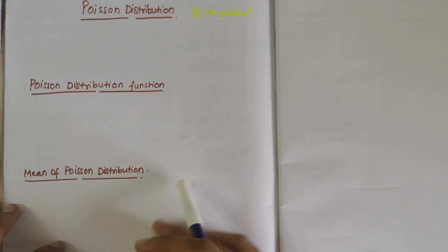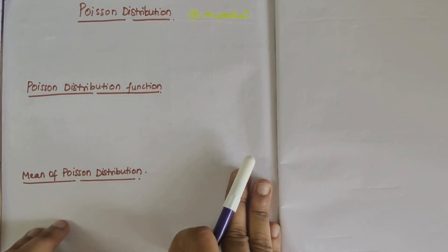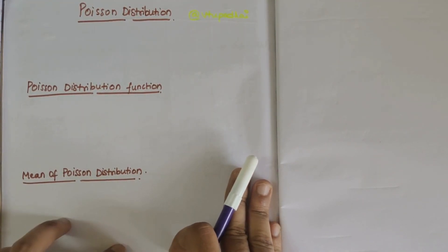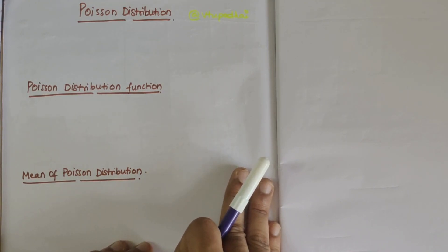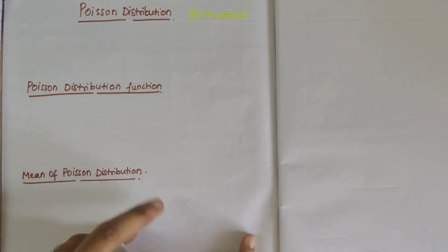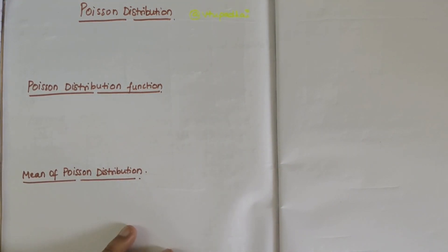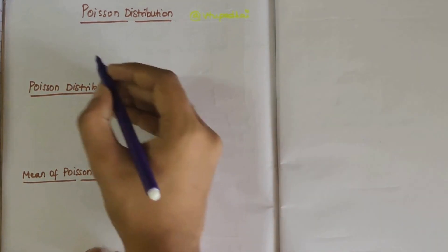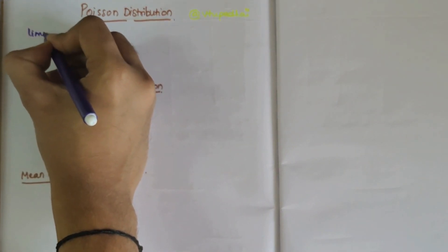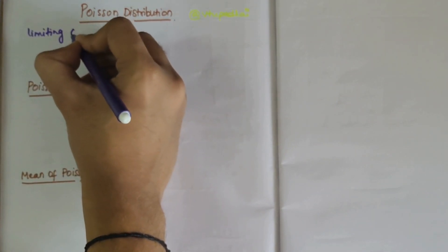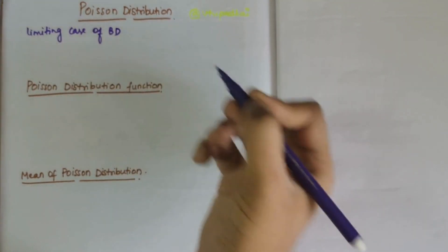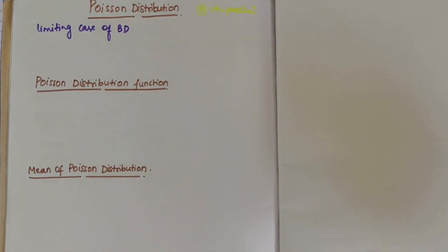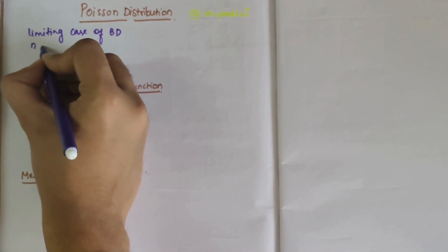In this video, we will be discussing Poisson distribution and deriving the mean, variance, and standard deviation of Poisson distribution. Firstly, understanding the definition: Poisson distribution is regarded as a limiting case of binomial distribution, where n is very large and p is very small.